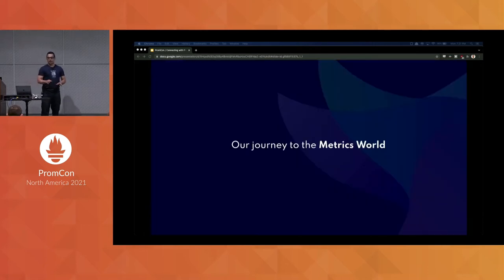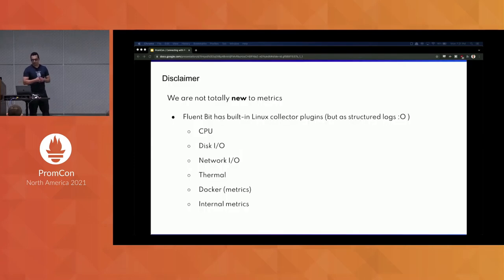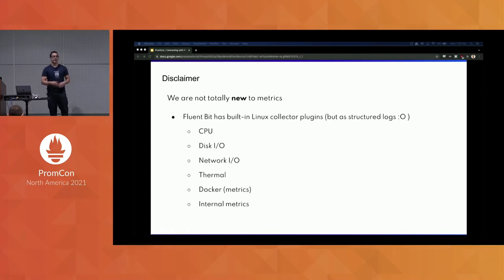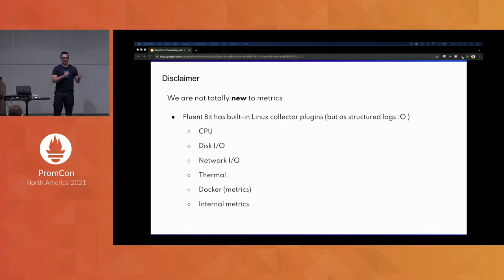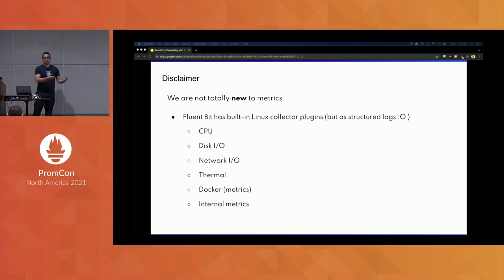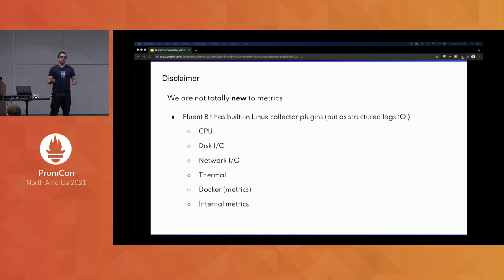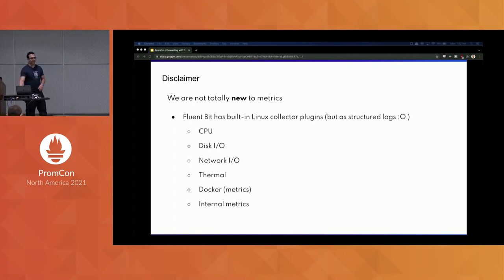In FluentBit specifically, since the beginning — I'm talking five, six years ago — we always had a metrics collector. FluentBit was created originally for embedded Linux, so we created CPU collector, memory collector, but all those metrics were handled as logs. That means no fixed schema, just a simple structure. We use MessagePack internally rather than JSON, but there's no enforcement of a fixed structure. So CPU metrics were gathered as JSON logs, not as a metric payload. That supported network, thermal, Docker metrics, and FluentBit metrics.